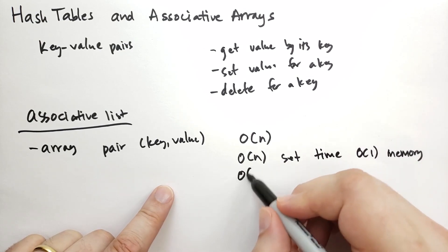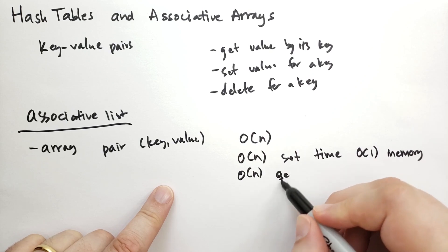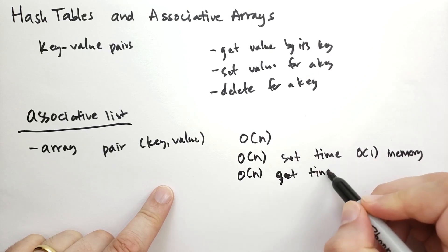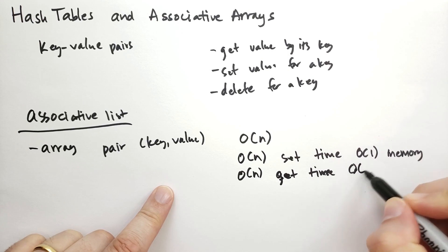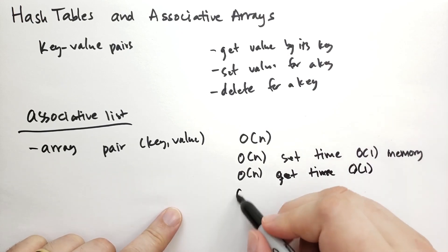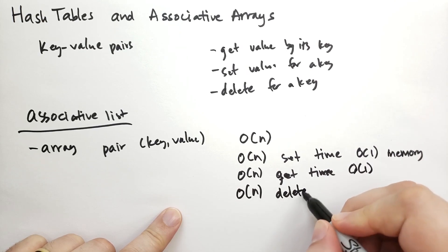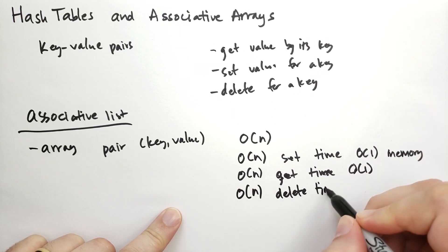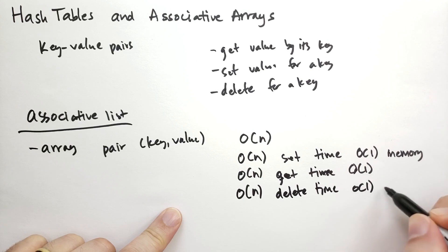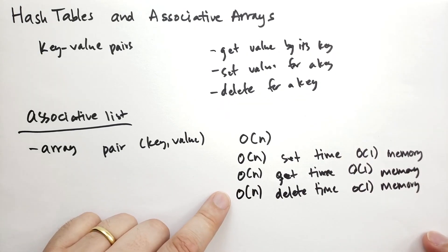If you wanted to get a value, you'd have to look at each item in the list, so that get time is an O(n) operation, but it's O(1) in memory. And if you wanted to remove an entry, you'd have to search the entire list again — that's also O(n) time and constant memory. This behavior isn't very bad, but it isn't very good either.